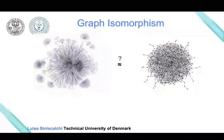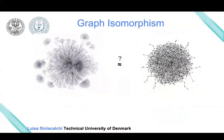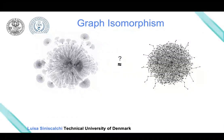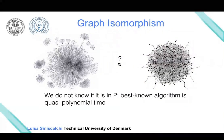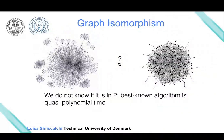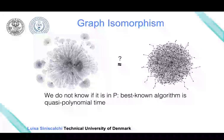Indeed, finding out whether two graphs are isomorphic takes time that we don't know is in P or not. Currently, the best algorithm takes quasi-polynomial time—more than polynomial time.